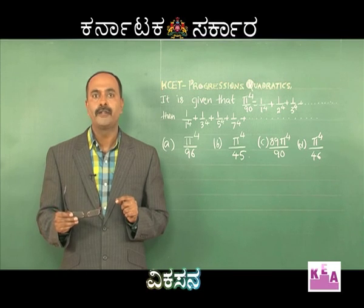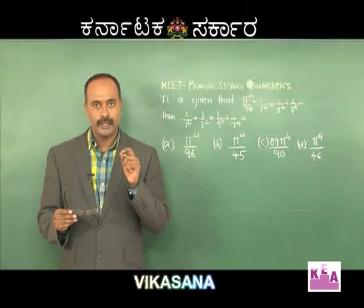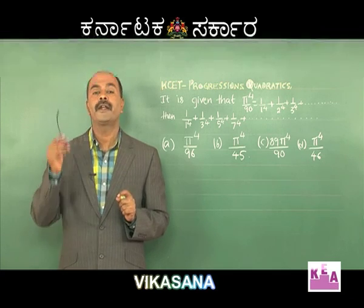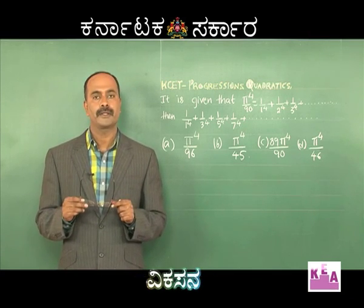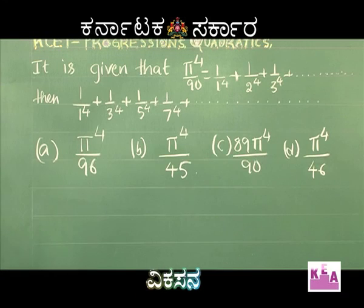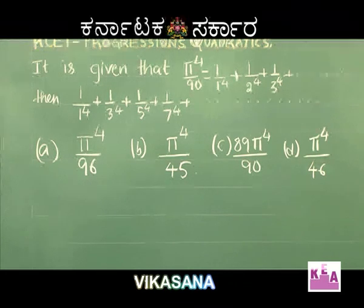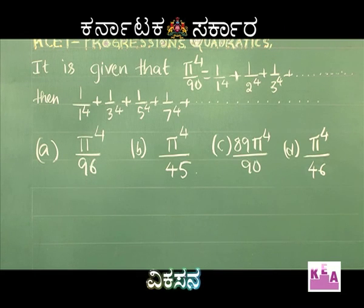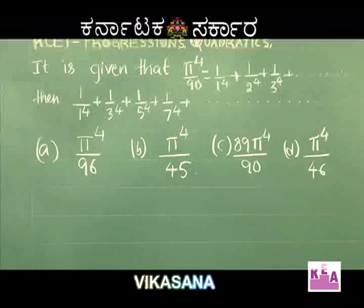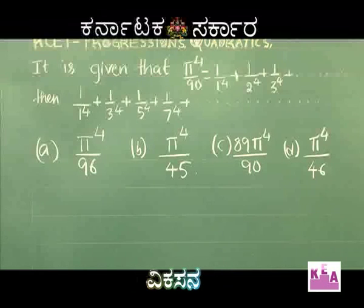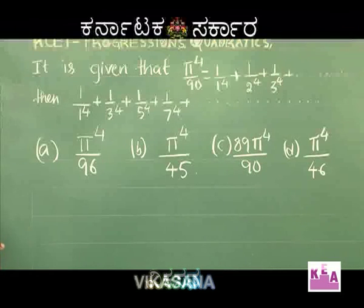Now we solve an entrance exam problem using common sense. It is given that π⁴/90 = 1/1⁴ + 1/2⁴ + 1/3⁴ + ... to infinity. Find: 1/1⁴ + 1/3⁴ + 1/5⁴ + 1/7⁴ + ... to infinity. Options: A) π⁴/96, B) π⁴/45, C) 89π⁴/90, D) π⁴/46.